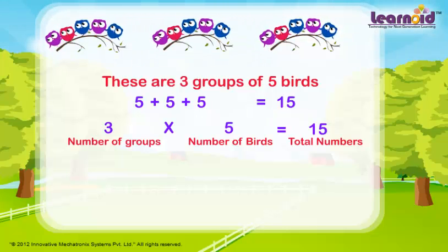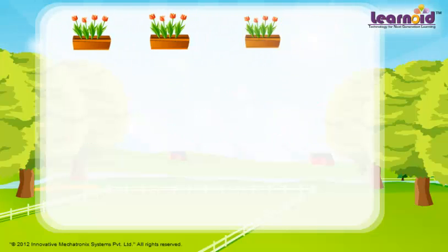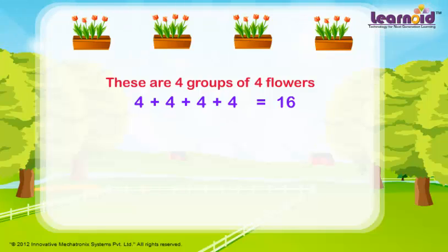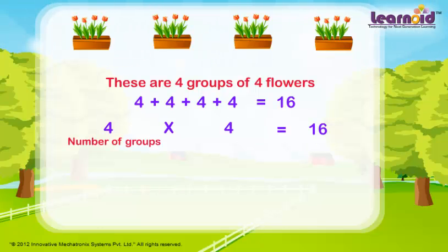One more example. These are four groups of four flowers each. 4 plus 4 plus 4 plus 4 is equal to 16, or 4 into 4 is 16. 4 is the number of groups and 4 is the number of flowers in each group. Total number of flowers is 16.